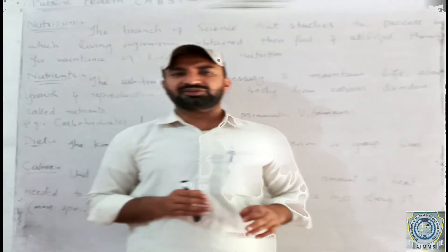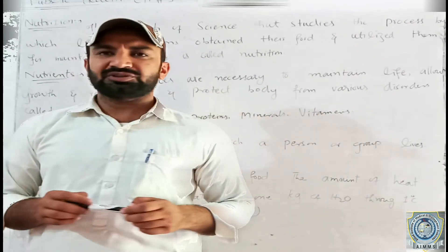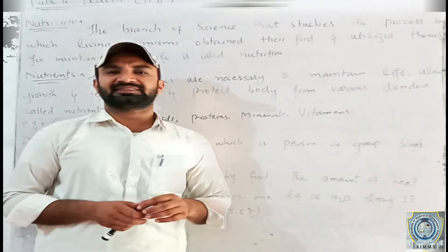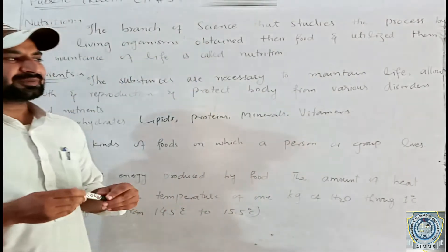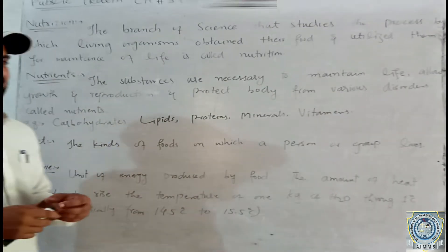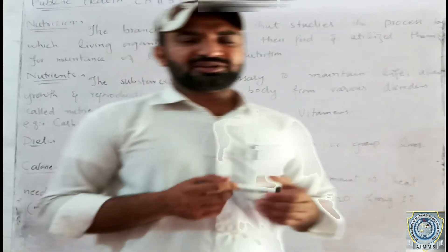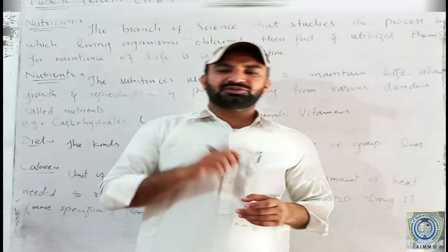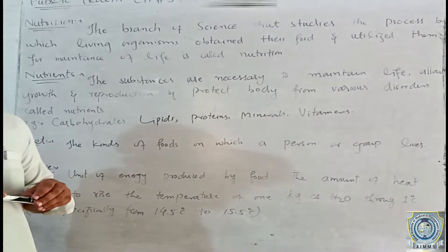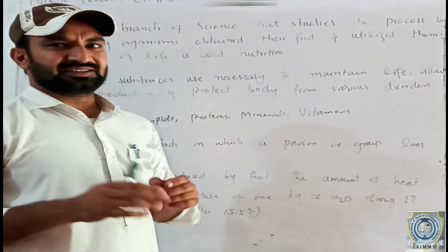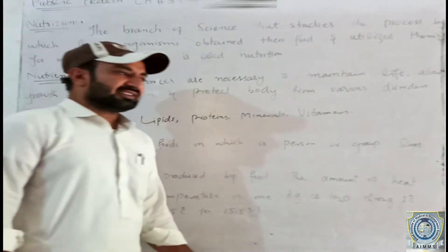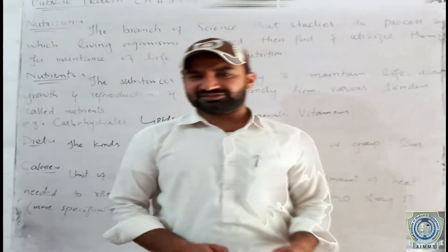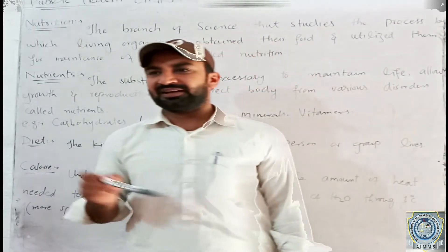There are two types of nutrients: essential nutrients and non-essential nutrients. Essential nutrients are those that the body cannot synthesize on its own, so they must be obtained from food. Non-essential nutrients are those that the body can synthesize itself.